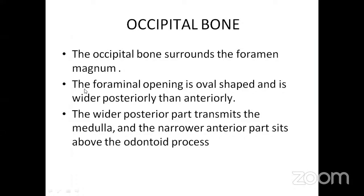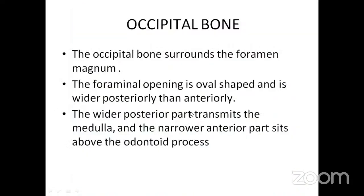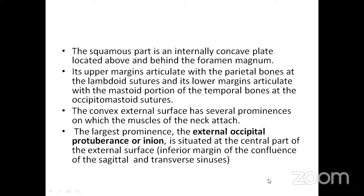The foramen magnum opening is oval-shaped and wider posteriorly than anteriorly — like an egg. The wider posterior part transmits the medulla, and the narrower anterior part sits above the odontoid process. The squamous part, forming the posterior foramen, is an internally concave plate whose upper margins articulate with the parietal bone at the lambdoid suture, and its lower margin with the mastoid portion of the temporal bone at the occipitomastoid suture.